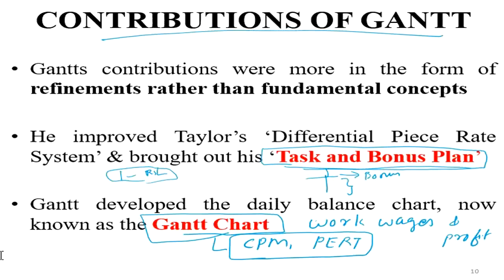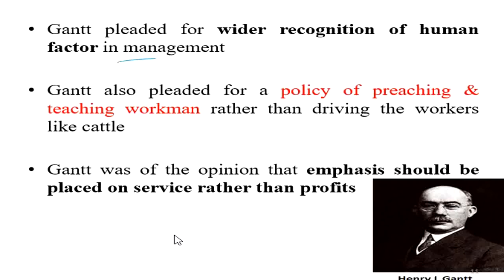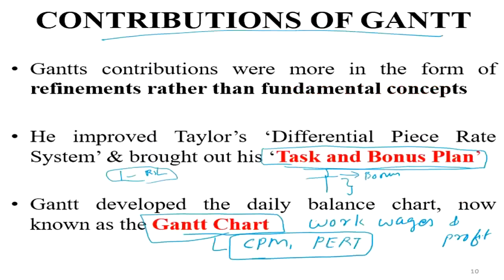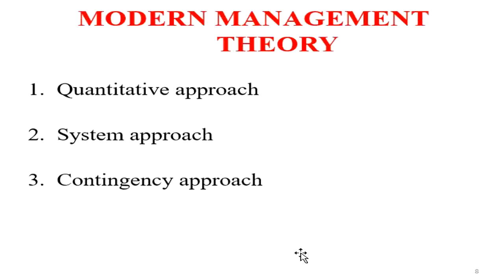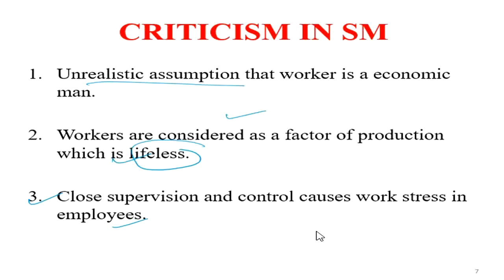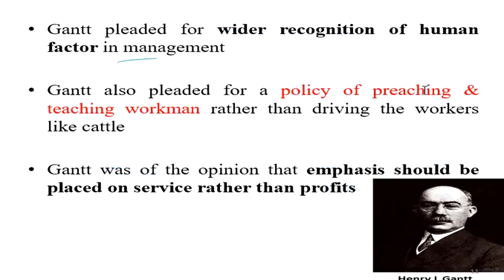Gantt believed in industrial efficiency by eliminating accidents, and he pleaded for the wider recognition of the human factor in management. In Taylor's concept, workers were considered as 'economic men,' but in Gantt's contribution, he suggested considering workers as human beings, including their feelings in the working environment.